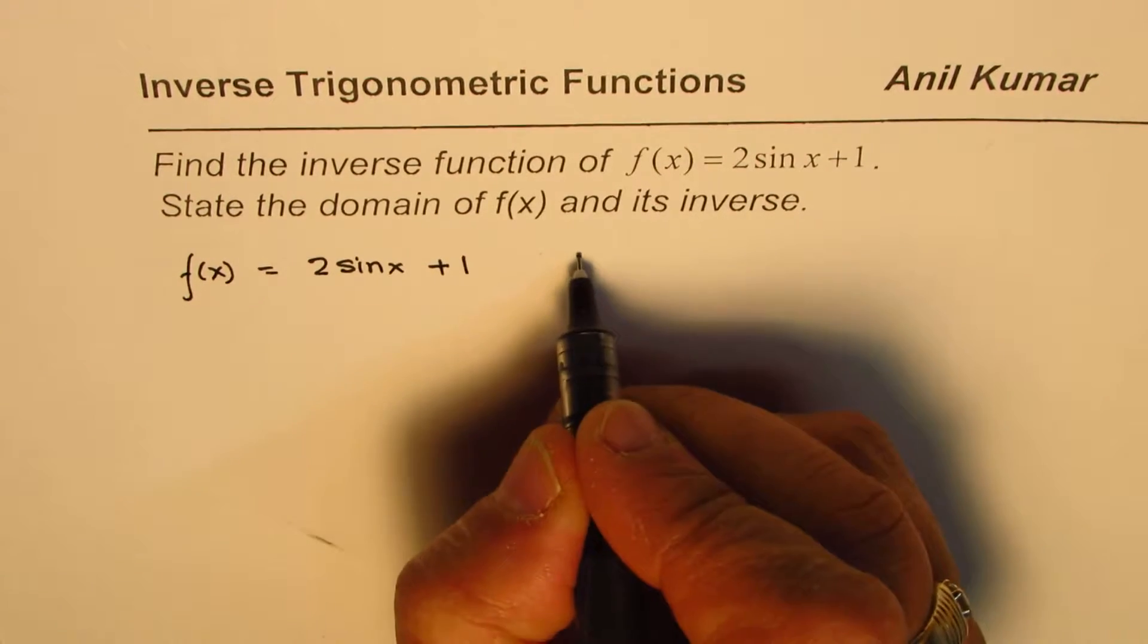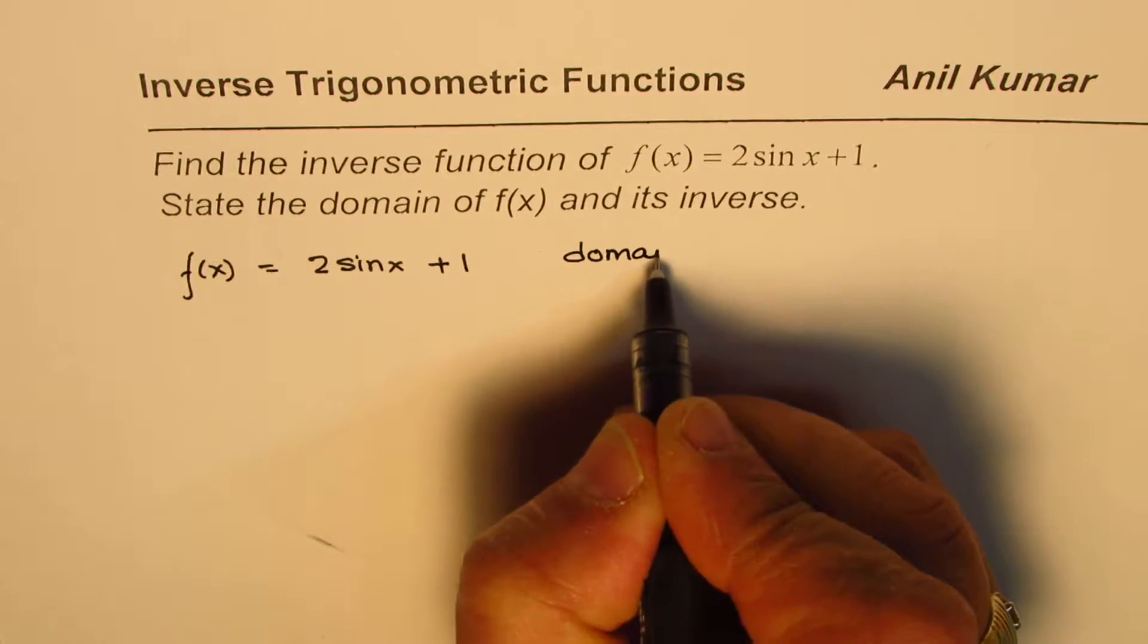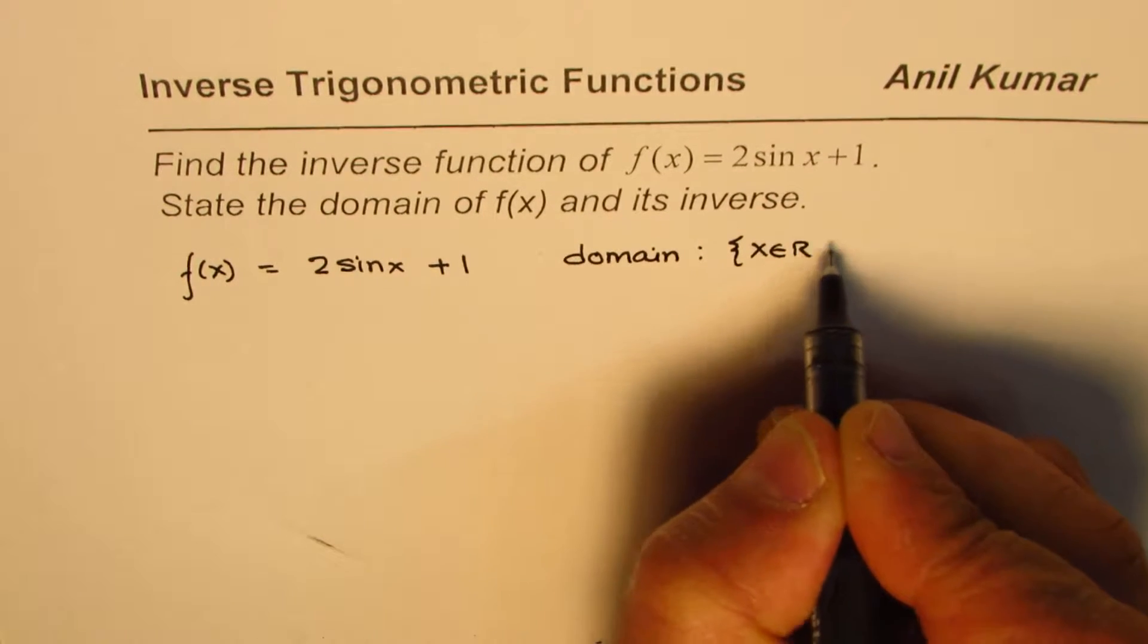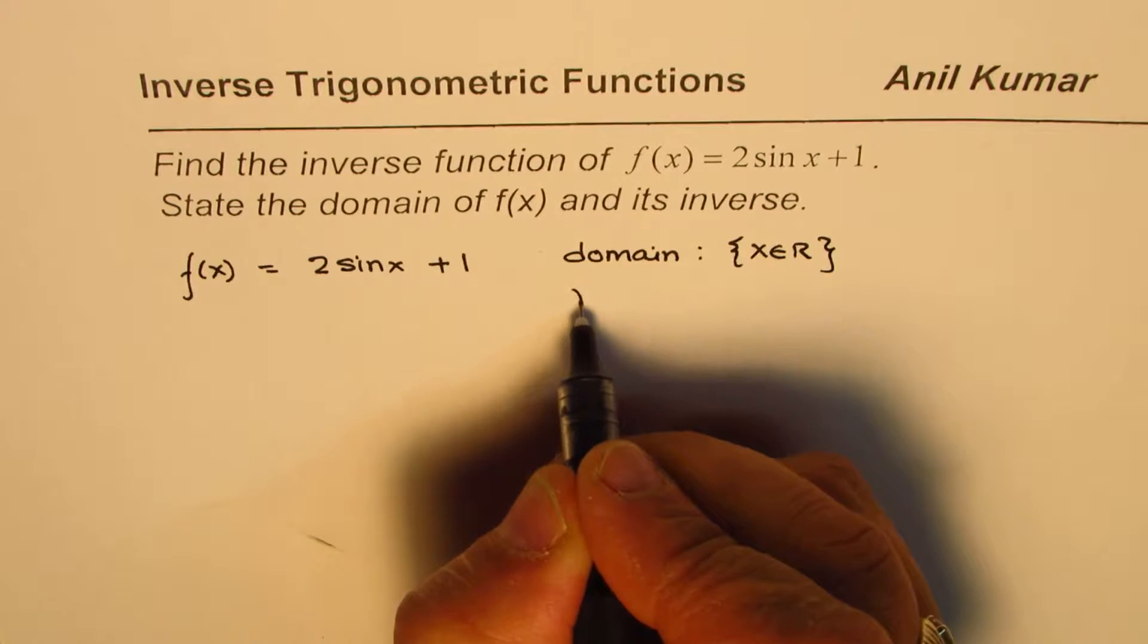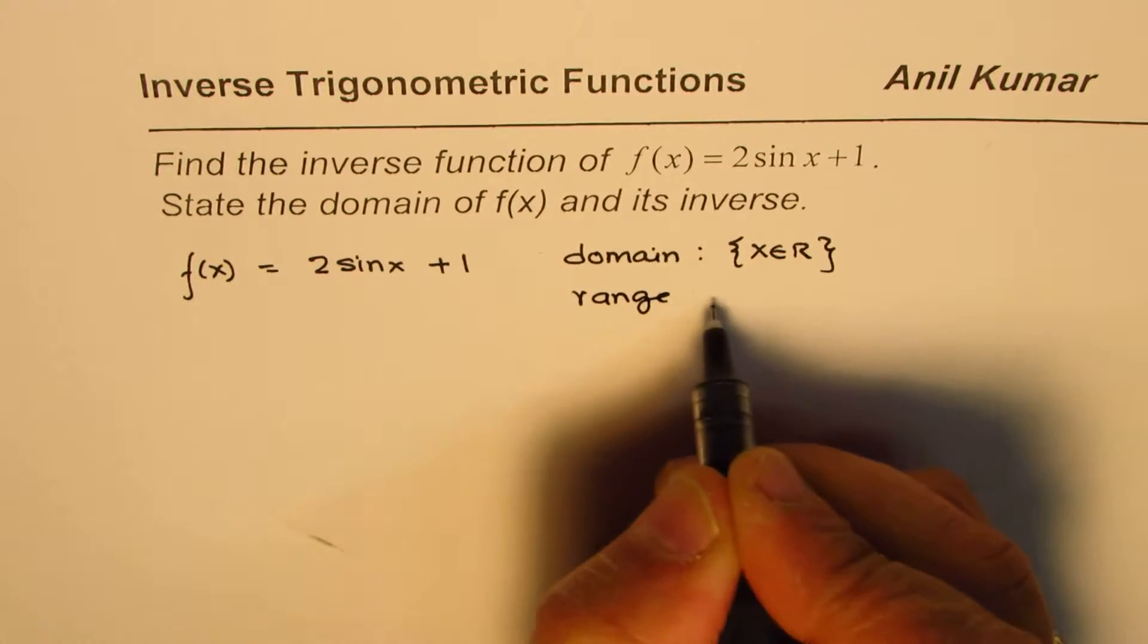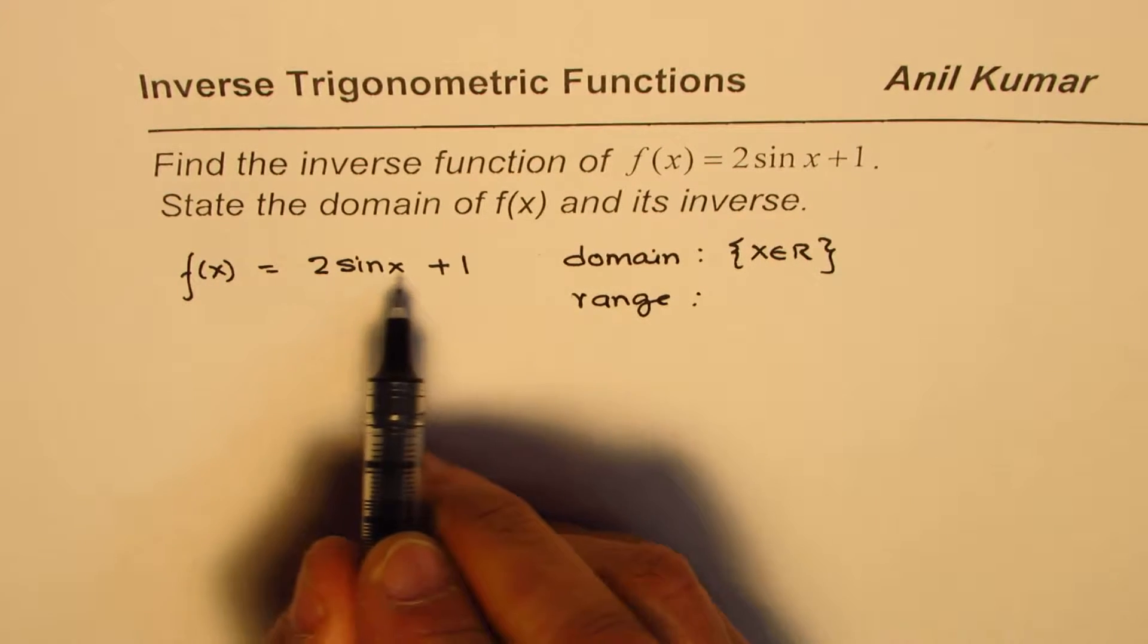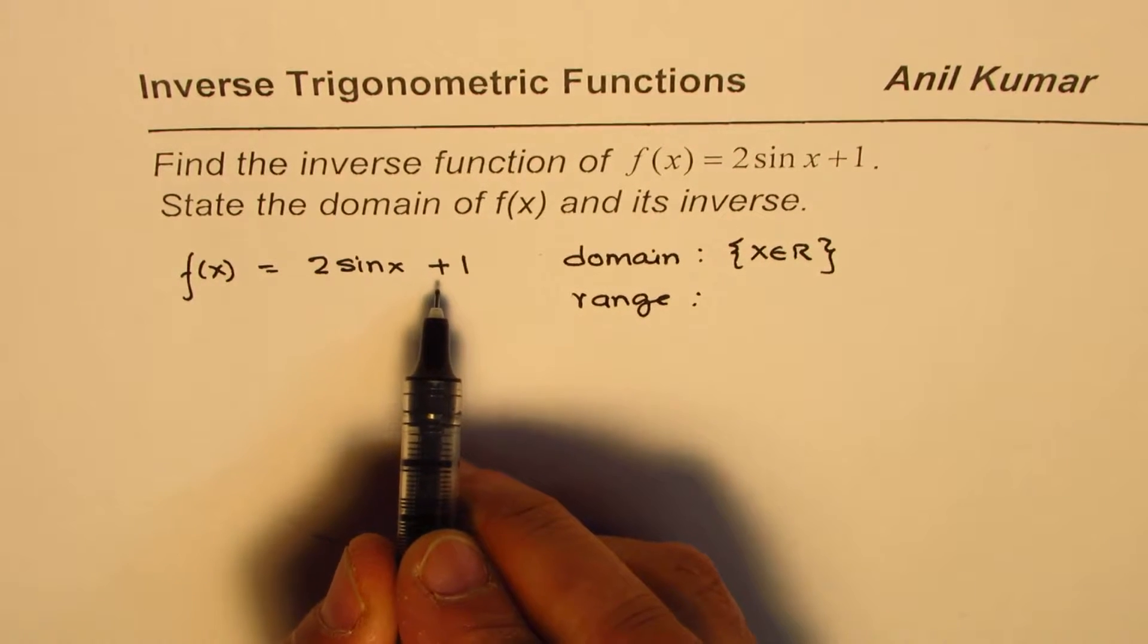We can write its domain and range. Domain has no restrictions, so domain of f(x) is x belongs to real numbers, and the range is, since the sine value has been multiplied by 2, and it has been moved upwards.